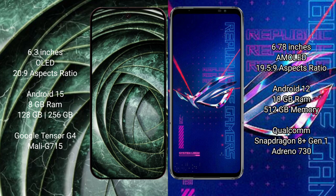The Google Pixel 9a runs on the Android 15 operating system, while the ASUS ROG Phone 6 Pro runs on Android 12. The Google Pixel 9a comes with 8GB RAM and 128GB or 256GB internal storage, powered by the Google Tensor G4 processor.